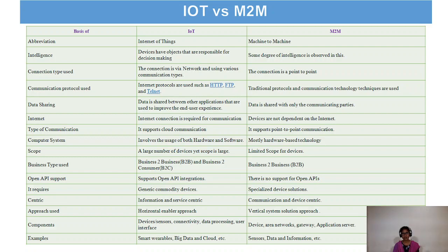Now the differences between Internet of Things and machine-to-machine communication. IoT stands for Internet of Things; M2M stands for machine-to-machine. For intelligence, IoT has objects responsible for decision making, while M2M has some degree of intelligence. IoT uses various connection types; M2M uses point-to-point, device-to-device connections. Protocols used in IoT include HTTP, FTP, and Telnet; M2M uses traditional protocols and communication technologies. Data sharing in IoT is between applications to improve end-user experience, while in M2M data is shared only between the communicating parties — one device to another.